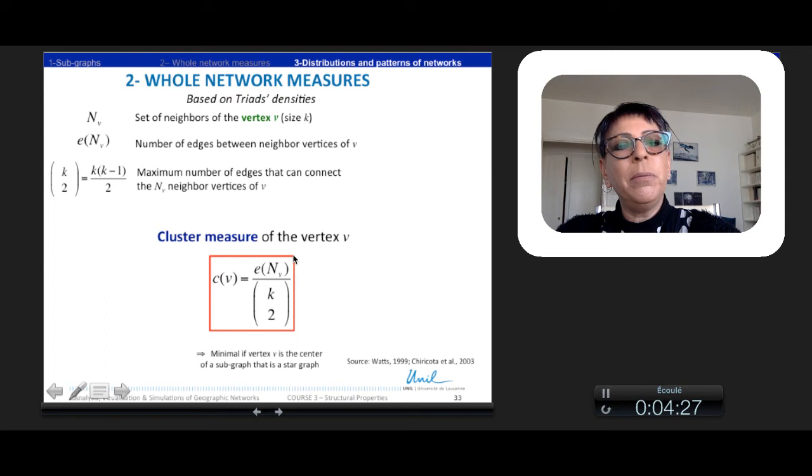Another measure more used is based on triad density, going further to mutual density. So let's take the set of neighbors of the vertex V, so NV of size K, and all the number of edges between the different neighbors, E(NV). And the maximum number of edges that can connect the NV neighbors' vertices, which depend on K, the number of neighbors. So we can calculate the cluster measure of a vertex, CV, which is the number of connected neighbors divided by all the possibilities.